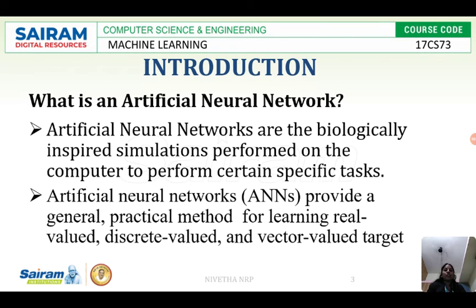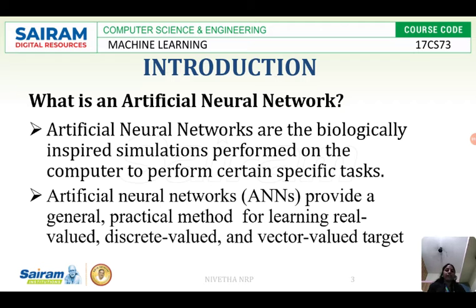What is an artificial neural network? It is a model which implements artificial intelligence. In artificial intelligence, we are making a machine think like a human being — implementing a thinking mechanism in a machine. When you give an input, the machine thinks over that input and produces an output. We implement this for learning real value data, discrete value data, and vector value data.